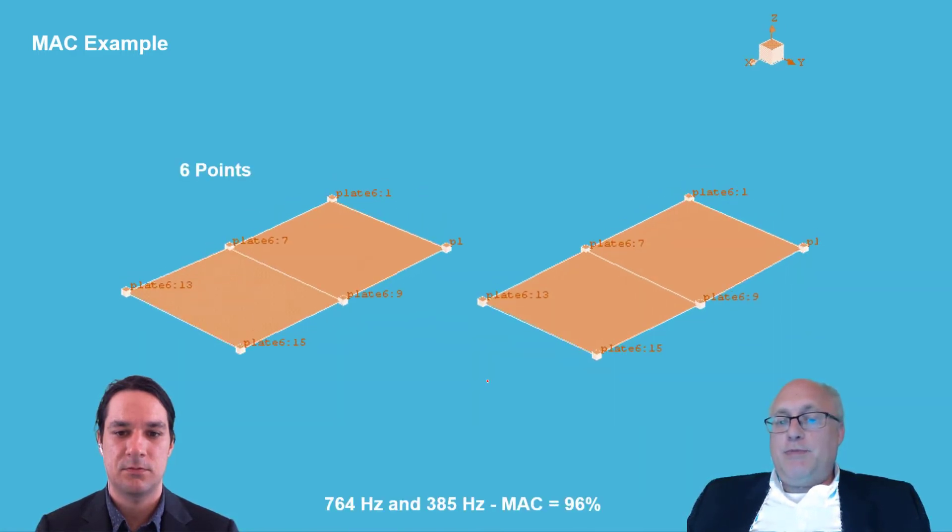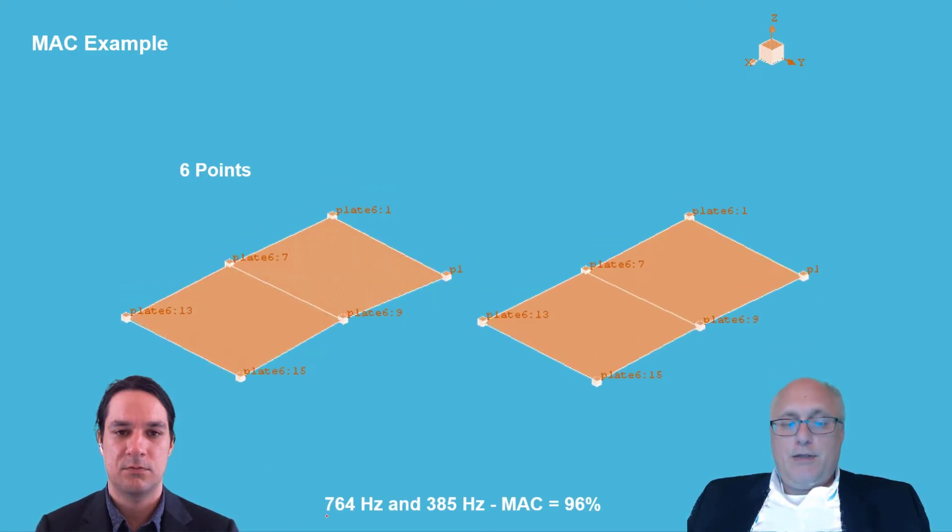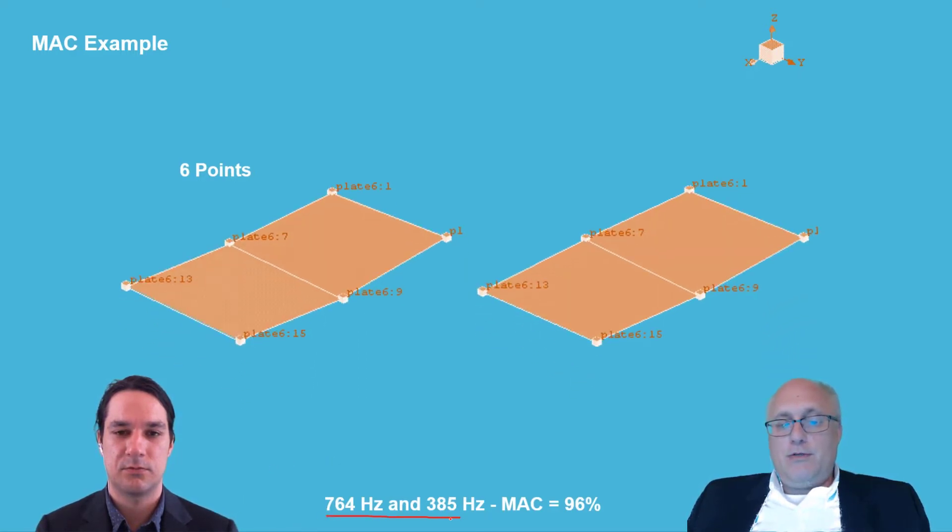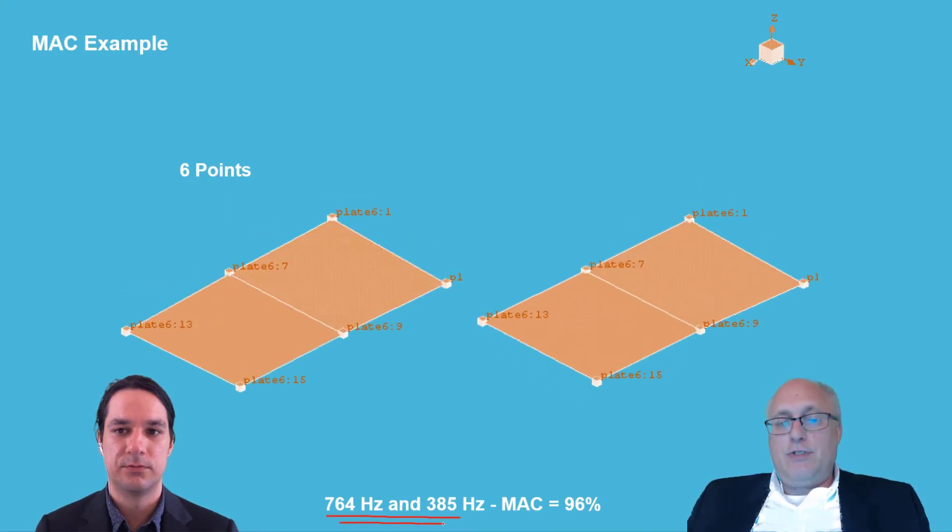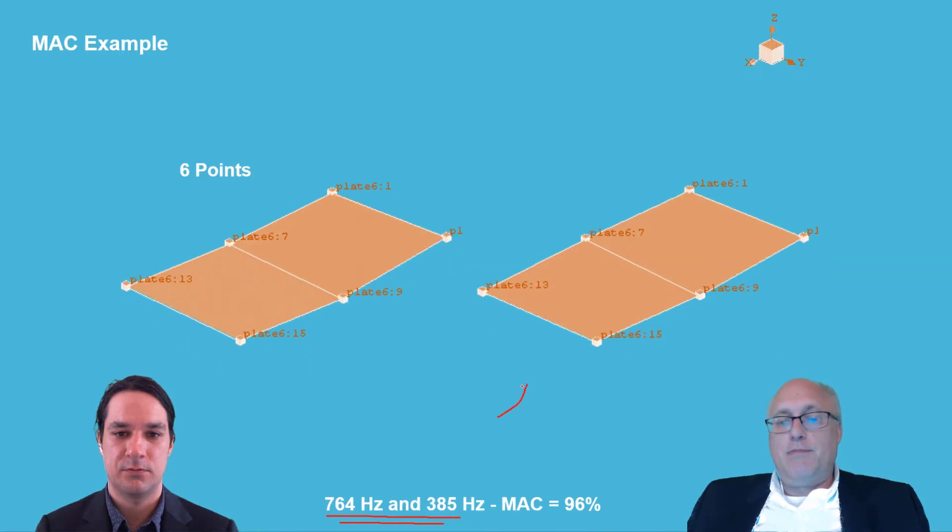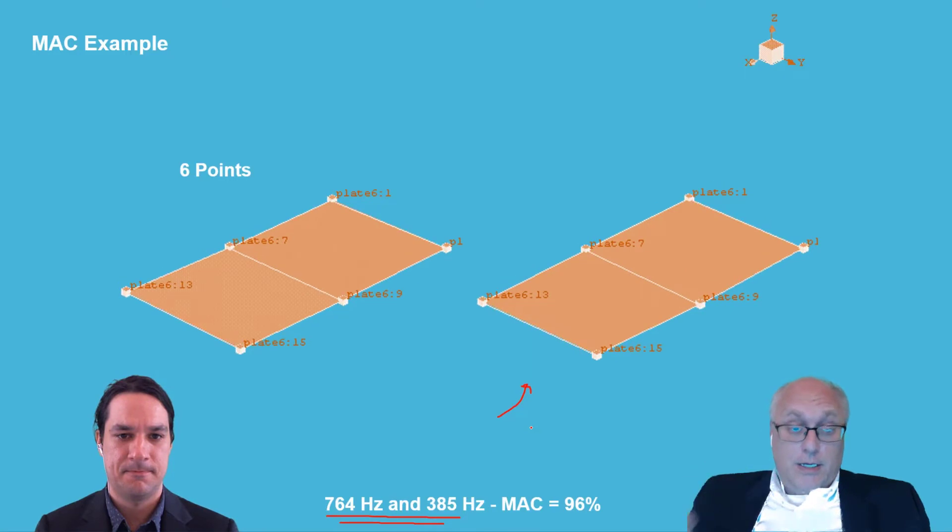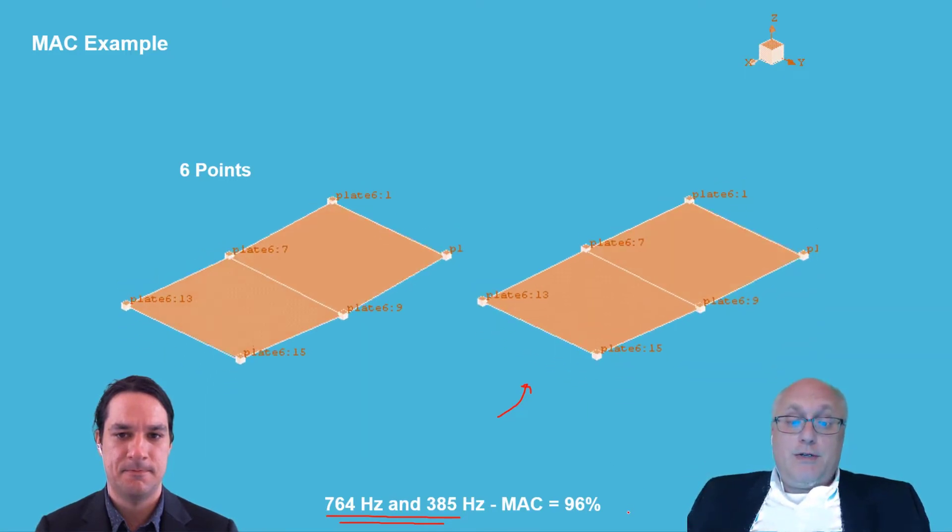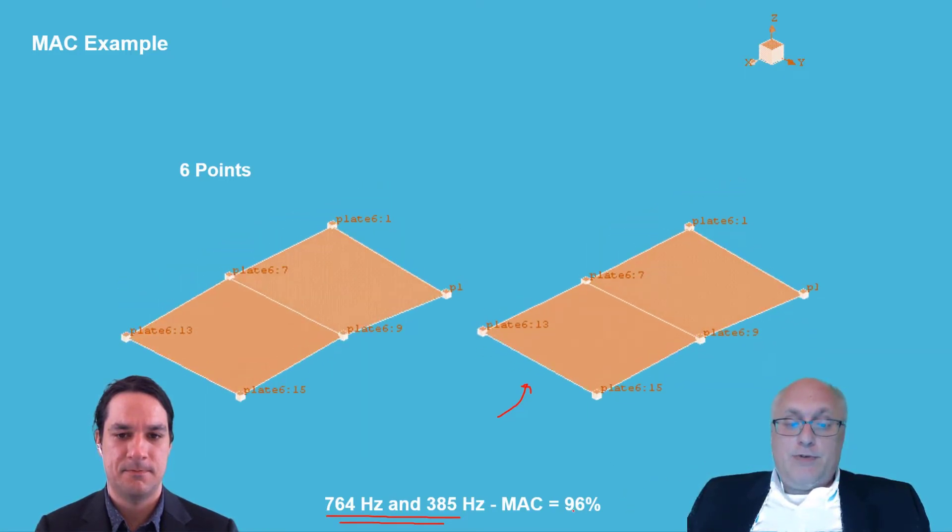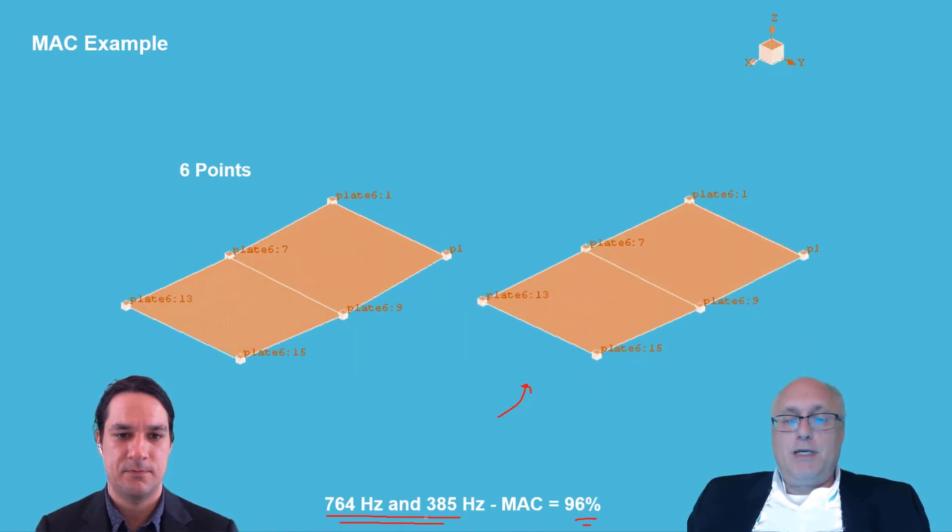And so sometimes problems arise, like when we have two different modal frequencies, so these are at two different natural frequencies, but the shapes, what do you say? Do they look different or the same? They look almost identical. Yeah. And because they look identical, the MAC value is very high, yet they're at two different frequencies, so that's a bit unexpected.